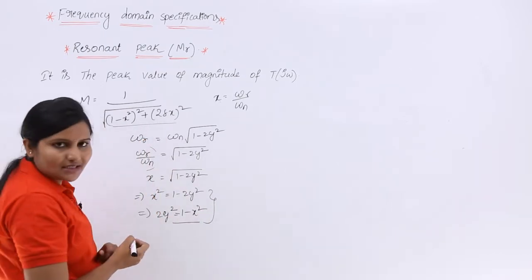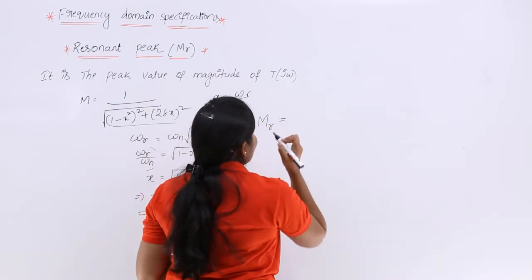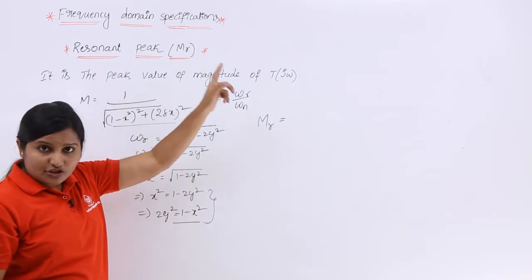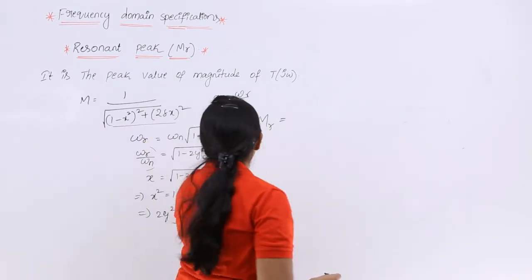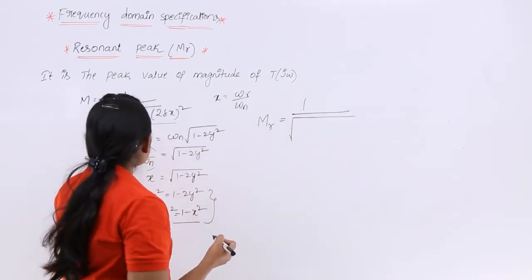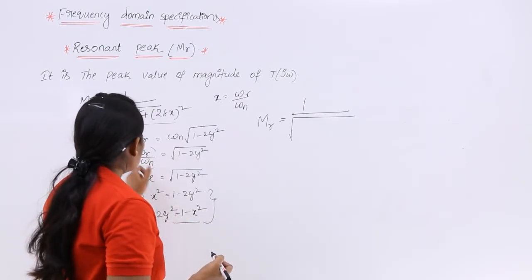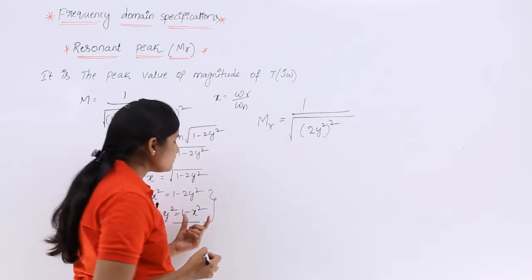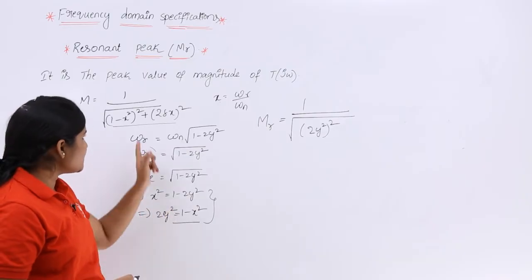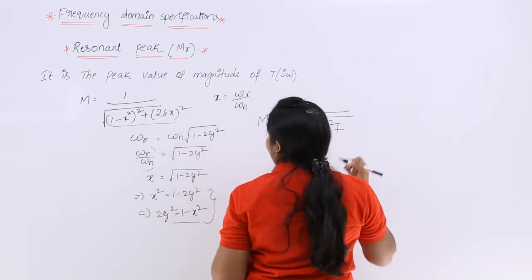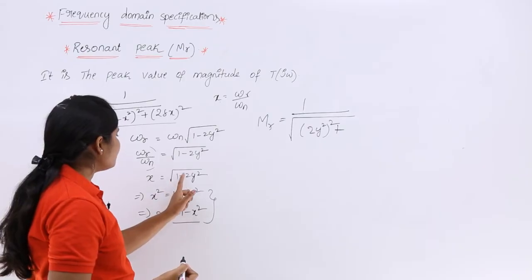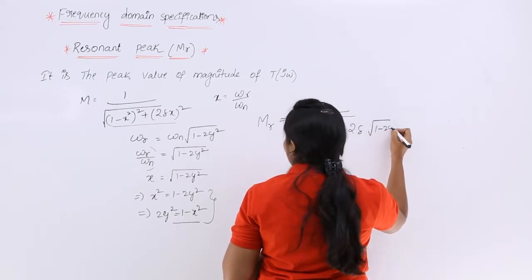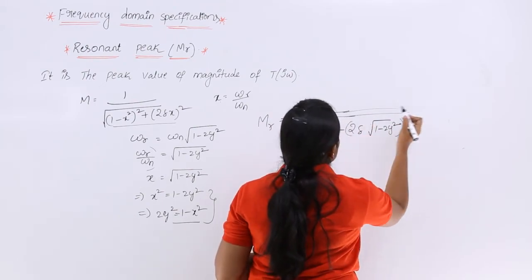From the same equation I can write 2 zeta squared as 1 minus x squared. So these two relations I am going to substitute in the magnitude equation to get the peak value at resonant frequency. So Mr equals 1 by root of (1 minus x squared) whole squared plus (2 zeta x) whole squared. Here, 1 minus x squared equals 2 zeta squared, so in place of 1 minus x squared I substitute 2 zeta squared, giving (2 zeta squared) whole squared. And in place of x I substitute root of (1 minus 2 zeta squared), so the second term becomes 2 zeta times root of (1 minus 2 zeta squared), whole squared.